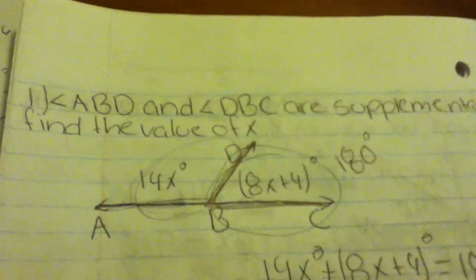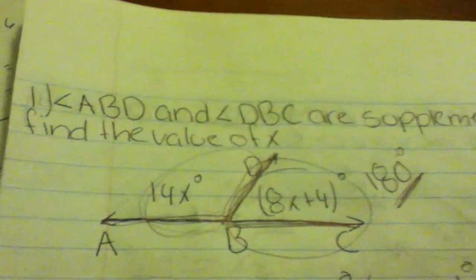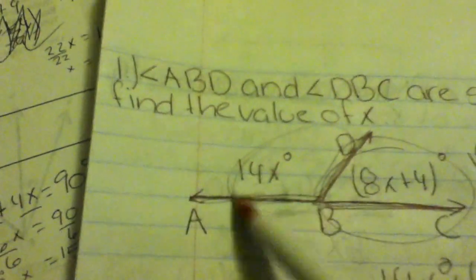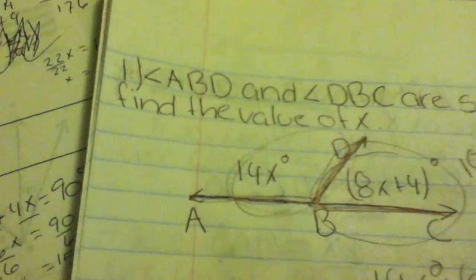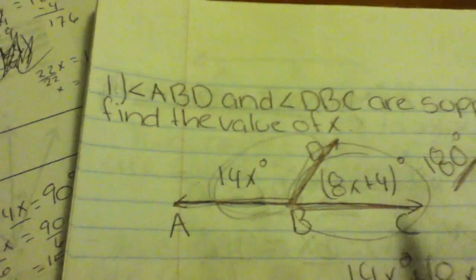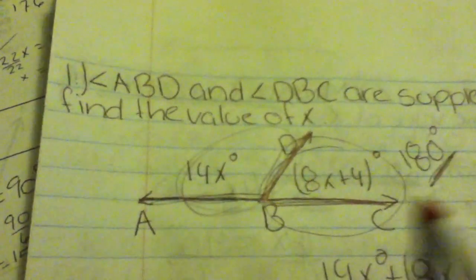This big angle right here is a supplementary angle. Supplementary angles add up to 180 degrees. Angle ABD and angle DBC are supplementary angles, so if you add this angle and this angle together you get 180 degrees. Find the value of x.